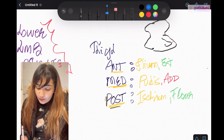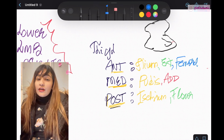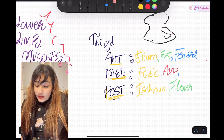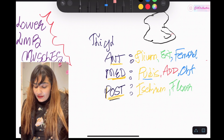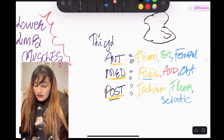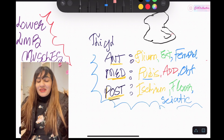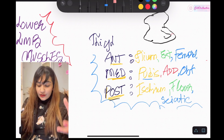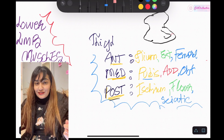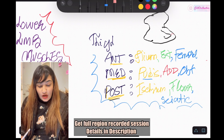The anterior compartment has the femoral nerve as its nerve supply. The medial compartment will have the obturator nerve — the nerve to the pubis. The posterior compartment will have the sciatic nerve. So you can see that we have now revised the origins, actions, and nerve supply of all the thigh muscles. This is literally 70% of what you need to know about the thigh muscles.